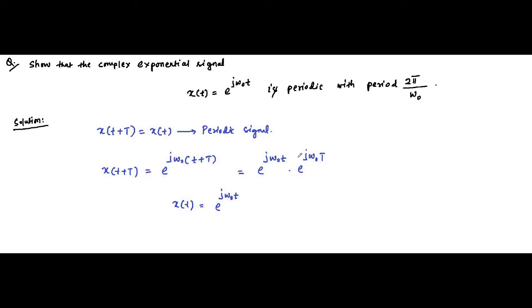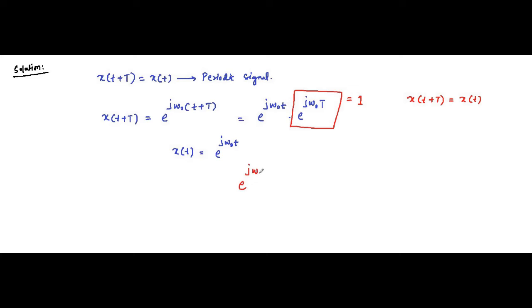For X(t + T) to equal X(t), the value of e^(jω₀T) should be equal to 1. Only then will X(t + T) equal X(t). For e^(jω₀T) to equal 1, we write it in the form cos(ω₀T) + j·sin(ω₀T). For this to equal 1, we substitute ω₀T equal to an even multiple of π, that is 2nπ.